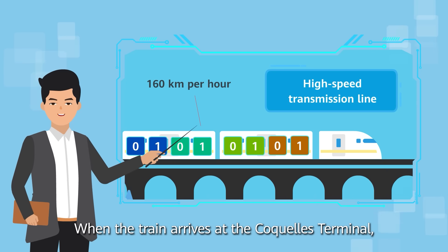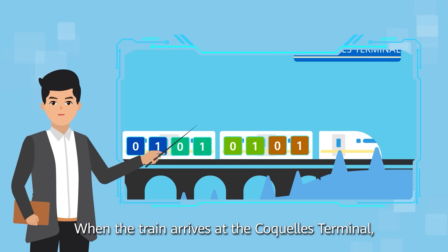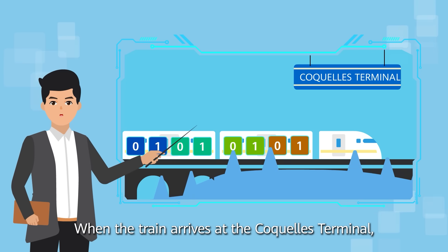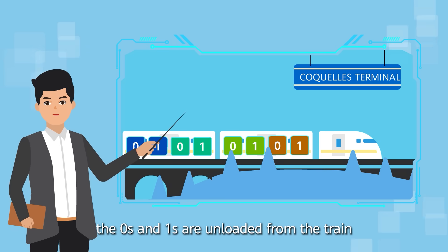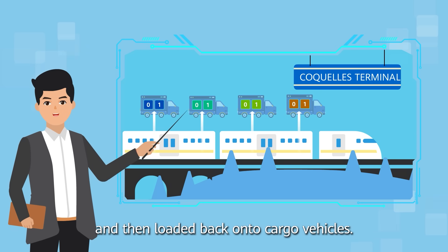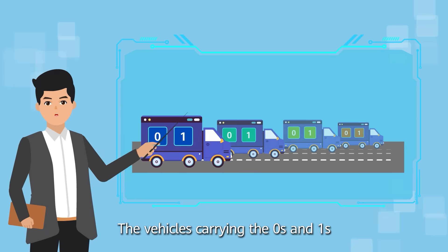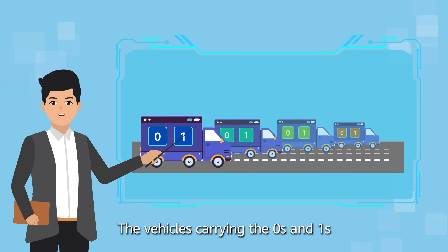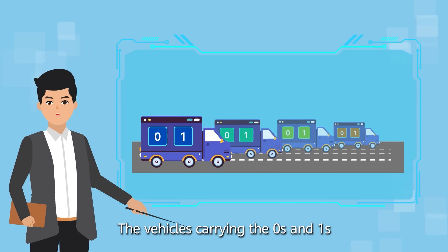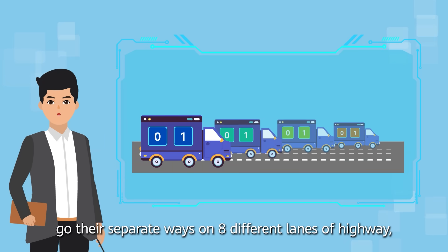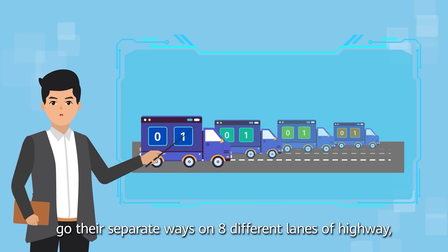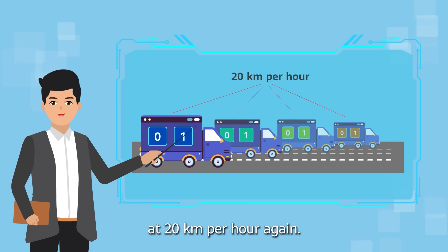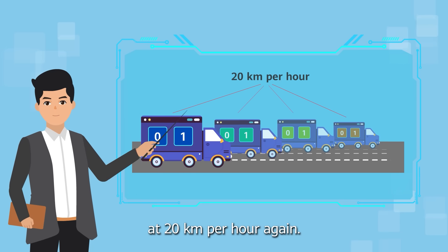When the train arrives at the destination terminal, the zeros and ones are unloaded from the train and then loaded back onto cargo vehicles. The vehicles carrying the zeros and ones go their separate ways on 8 different lanes of highway at 20 km per hour again.